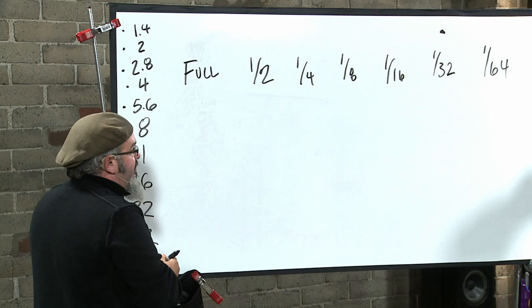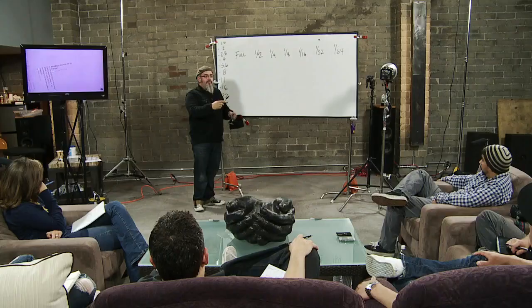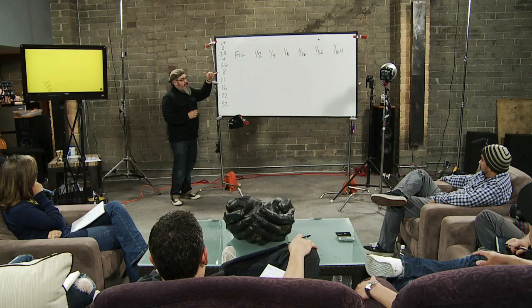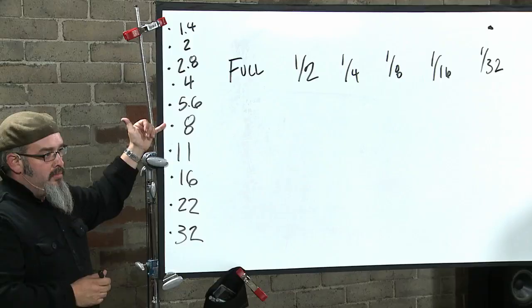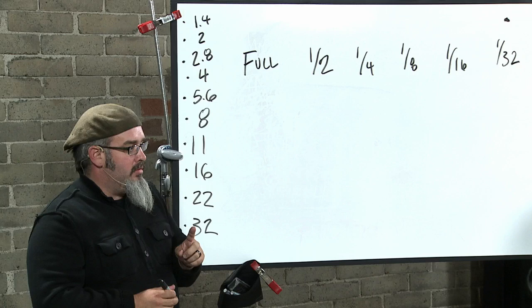The relationship between these settings on the back of that flash is one stop of light. When I change that light from full power to half power, I have cut the amount of light coming out by one stop. Where's our other one-stop relationship? Right here. If I go from f/8 to f/5.6, that's one stop of light. If I go from full power to half power, that is one stop of light.